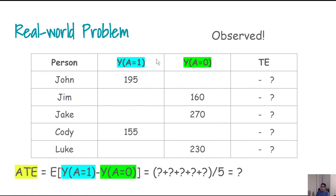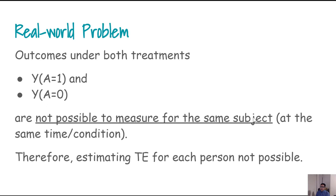The real world problem is that in the real world we can only observe one potential outcome, not both. Under a real world scenario, if we observe John's outcome under exposure, we would not see his outcome under the unexposed condition. The same is true for all other patients — we observe only one condition, either in the exposed group or the unexposed group. If we are observing only one condition, we cannot estimate the individual treatment effect or the average treatment effect directly. We cannot measure the outcome for the same subject under two different conditions.